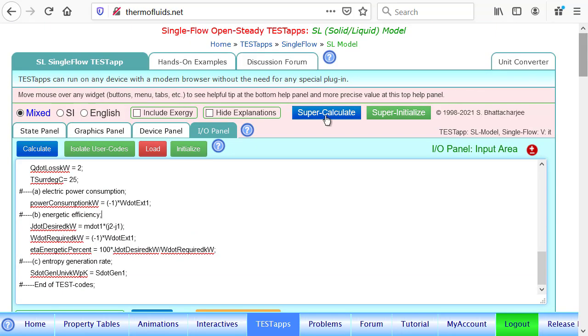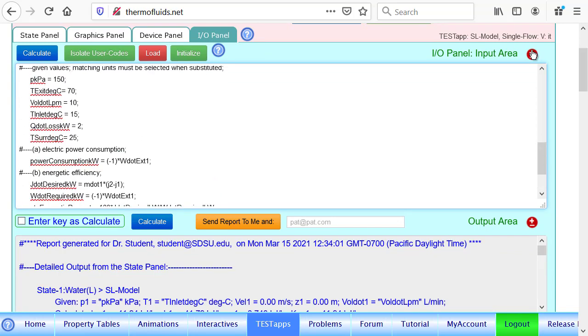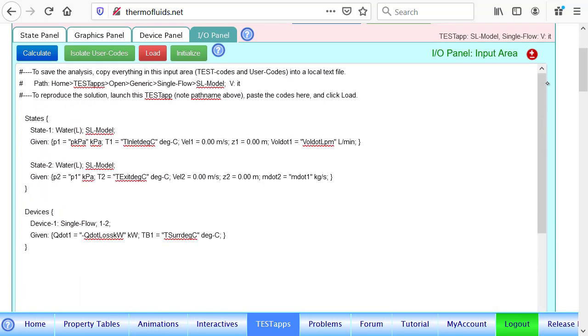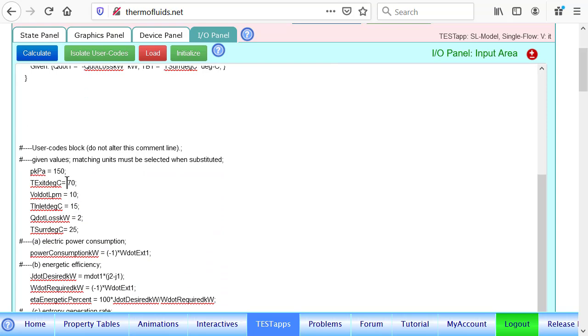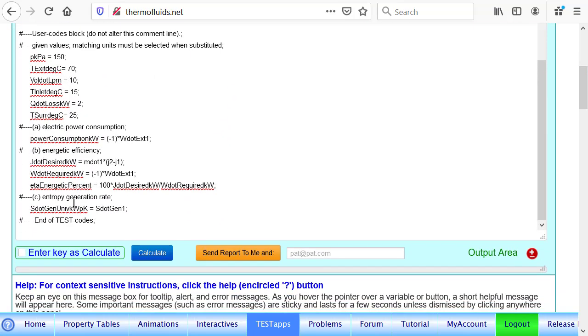So we can do a super calculate just to make sure everything is correct. In this panel you can see the entire TEST code. These are the TEST codes that we produced, and these are the given values.